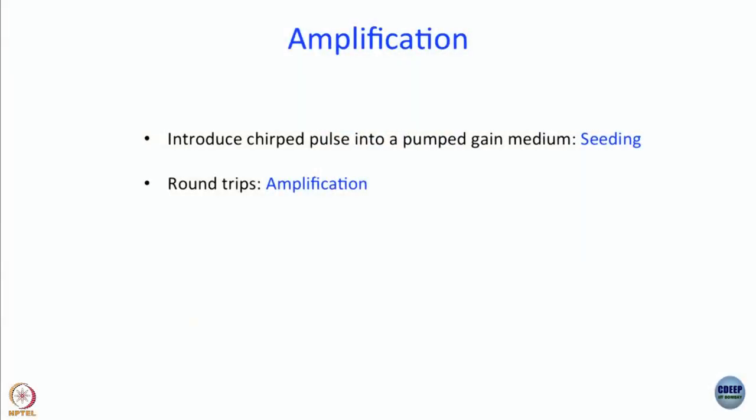Then what will happen? The pulse, when it goes into the pumped gain medium, will find a lot of ions or molecules in their excited state. It is going to cause stimulated emission, and that will result in amplification. You then make it go back into the gain medium again for further amplification, and so on. You do a number of round trips in order to amplify the light that you have seeded in.